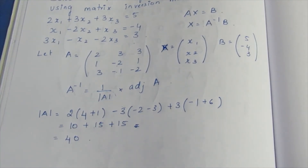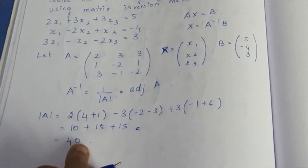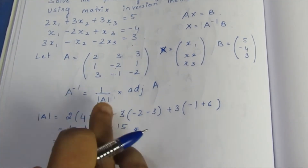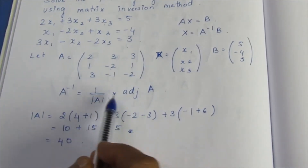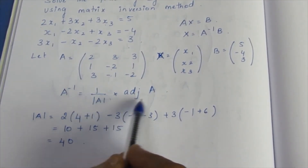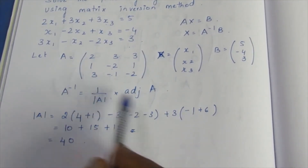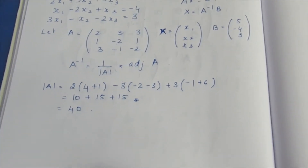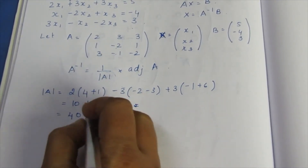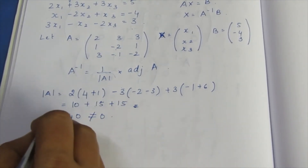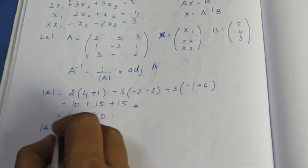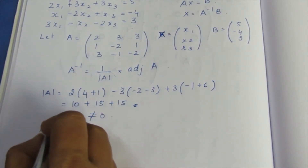So the determinant of A equals 14, which is not equal to 0. Since determinant A is not equal to 0, A inverse exists.